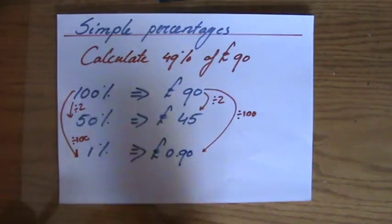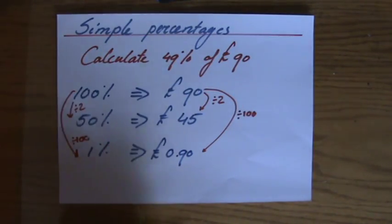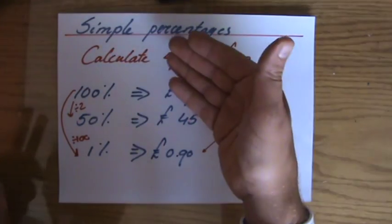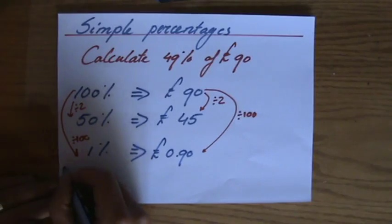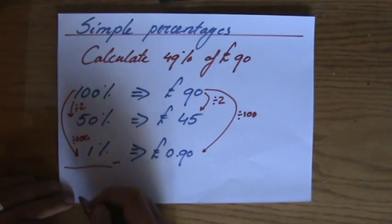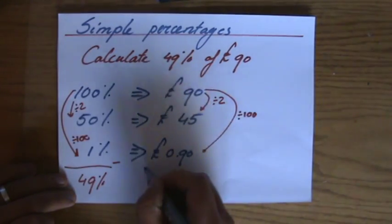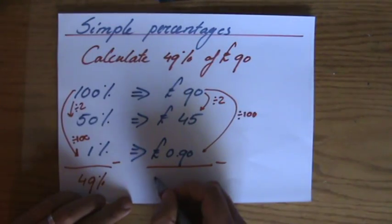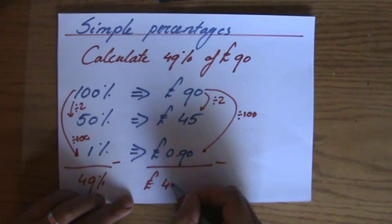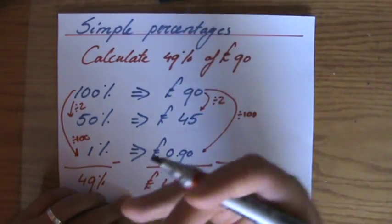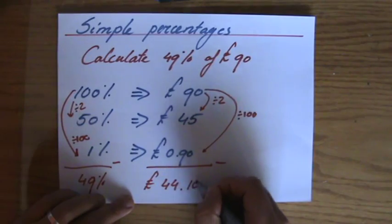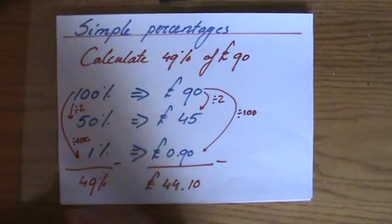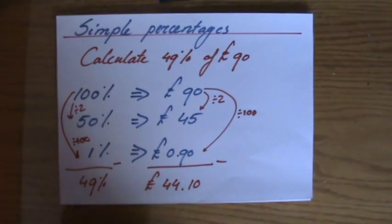So 90 cents, 0.90 if you like. Do we see that 1% is 90 cents? Okay, so they want me to find 49%. Well, 50% minus 1% is 49%, so 45 pounds take away 90 cents is 44—not dollars, I said pounds—44 pounds and 10 cents. So 49% is equivalent, is the same in this particular scenario, to 44 pounds and 10 cents.